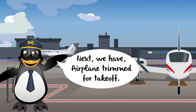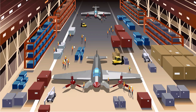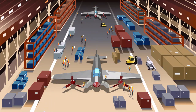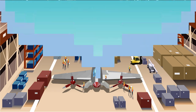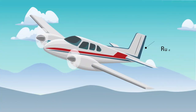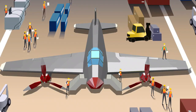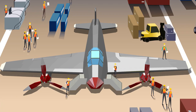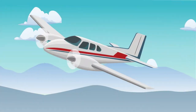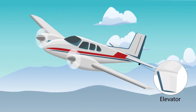Next, we have airplane trimmed for takeoff. VMC is determined by how the manufacturer specifies the aircraft to normally be trimmed for takeoff. If the manufacturer specifies a takeoff range for rudder trim, ailerons, or another trimmable surface, then those surfaces need to be set in those positions or range according to the manufacturer. For most airplanes type certificated under Part 23, this requirement would only affect the elevator.